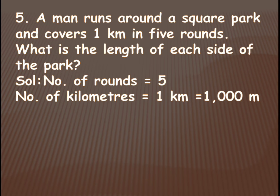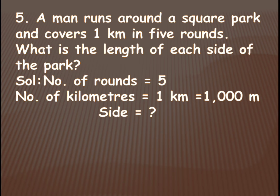The distance he covers is one kilometer. We will convert it into meters — one kilometer equals one thousand meters — because one round will be in meters only. We can't find the answer in kilometers, that's why we convert. What we need to find is the length of each side of the square park. So first, we find the perimeter.